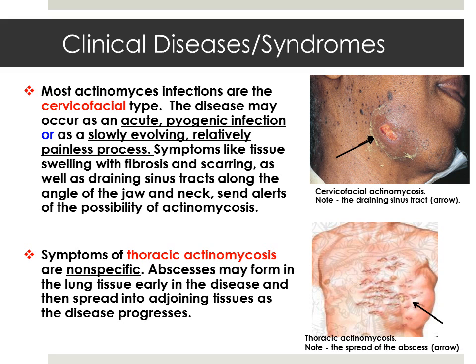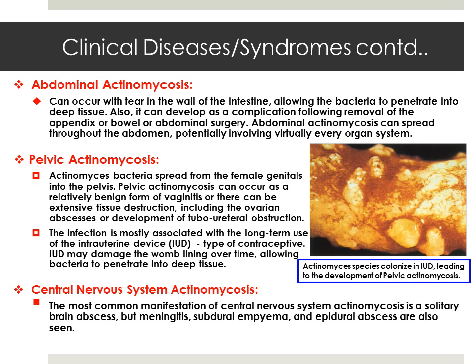Symptoms like tissue swelling with fibrosis and scarring, as well as draining sinus tracts along the angle of the jaw and neck, alert clinicians to the possibility of actinomycosis. The second most common form is thoracic actinomycosis, which develops inside the lungs or coronary airways. Symptoms of thoracic actinomycosis are non-specific; however, abscesses may form in lung tissues early and then spread into adjoining tissues as the disease progresses.